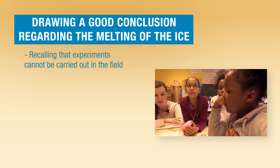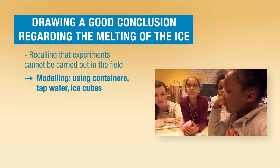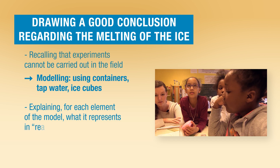They create a model in which the brick represents the continents, the ice cubes represent the continental ice and the sea ice, and the container and the water represent the ocean and its level. It is important to make the students realize the correspondence between the different elements of their model and the elements of the phenomenon they are trying to model. It is also important to help them make the connection between the experimental findings and the original question.